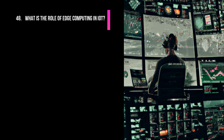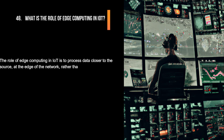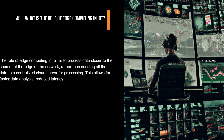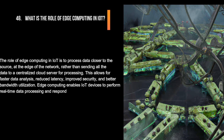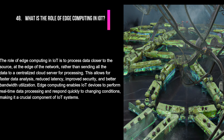What is the role of edge computing in IoT? The role of edge computing in IoT is to process data closer to the source, at the edge of the network, rather than sending all the data to a centralized cloud server for processing. This allows for faster data analysis, reduced latency, improved security, and better bandwidth utilization. Edge computing enables IoT devices to perform real-time data processing and respond quickly to changing conditions, making it a crucial component of IoT systems.